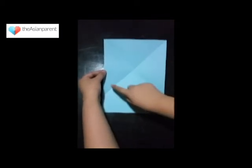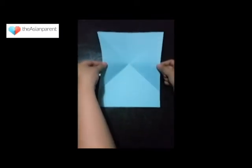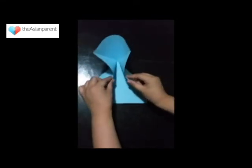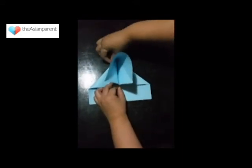After you make the X, what you want to do is get the sides of the paper and fold it in towards each other. Pressing it down to the bottom half of the paper and what happens is you make a triangle. So just smoothen the sides out.